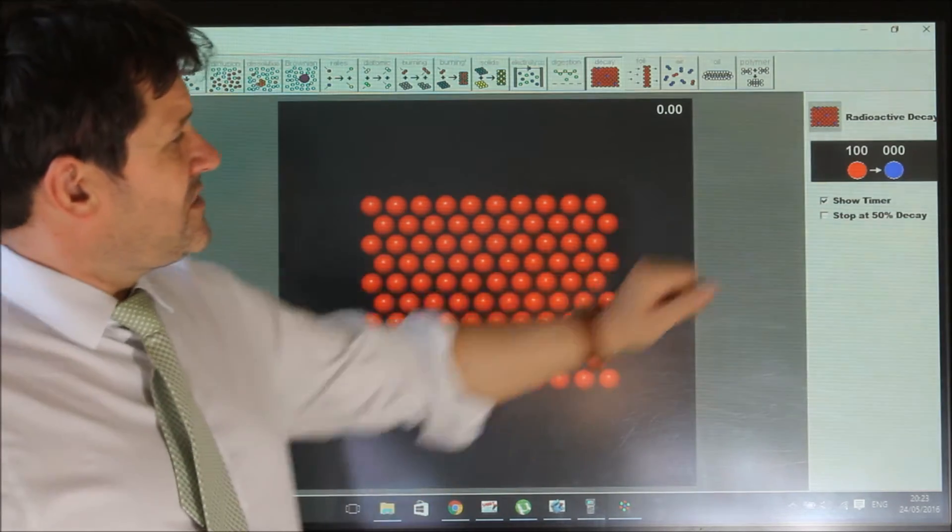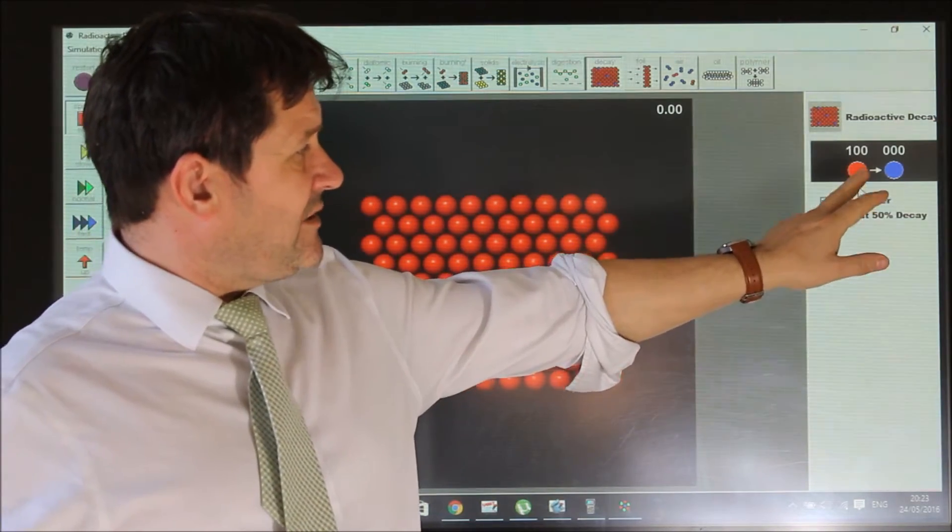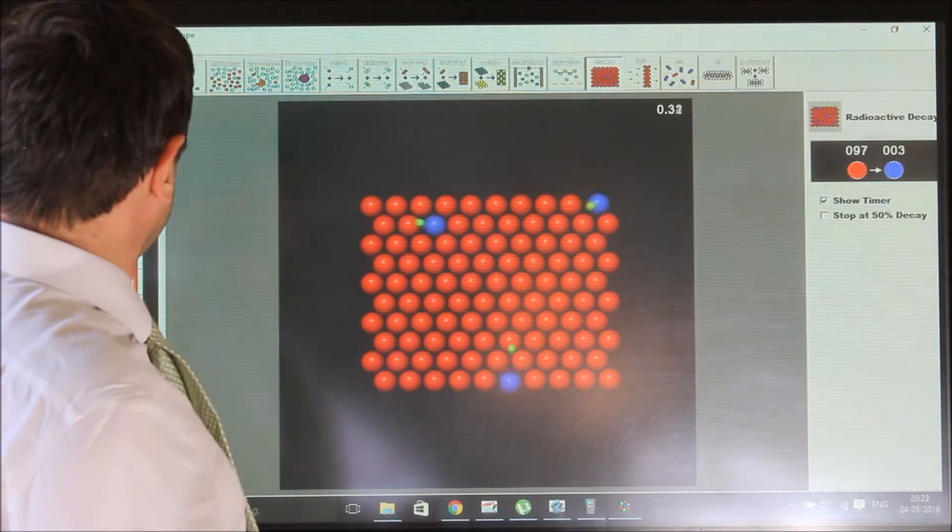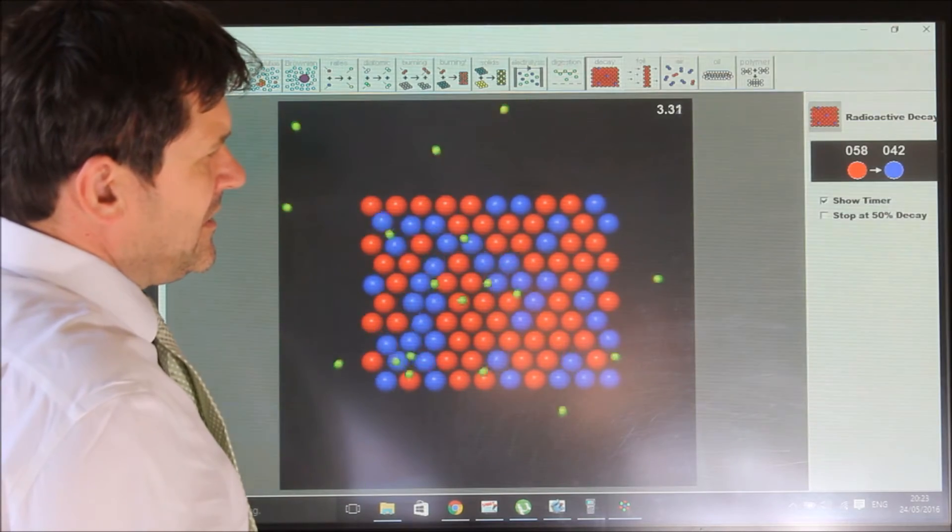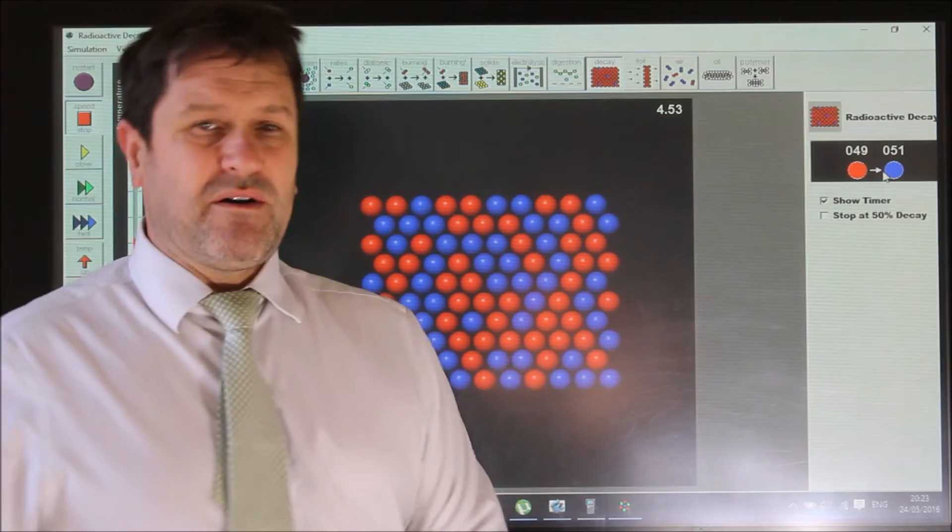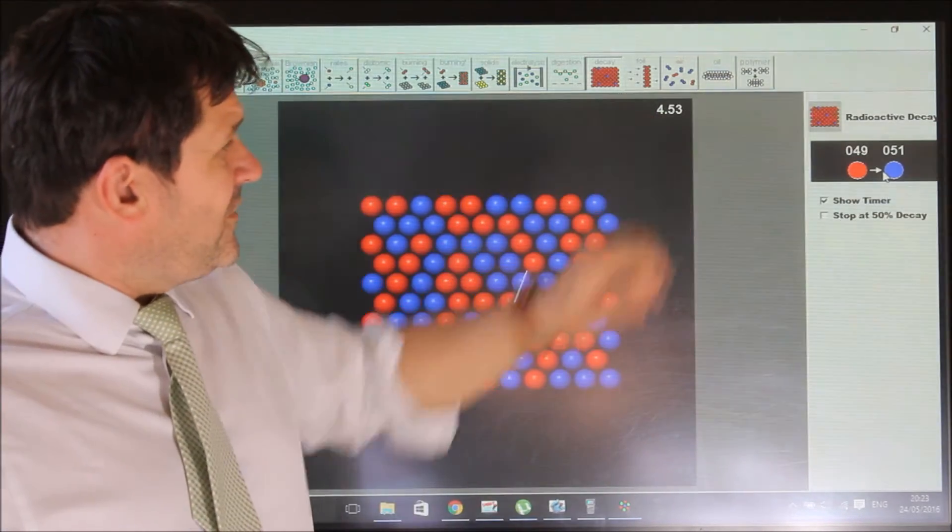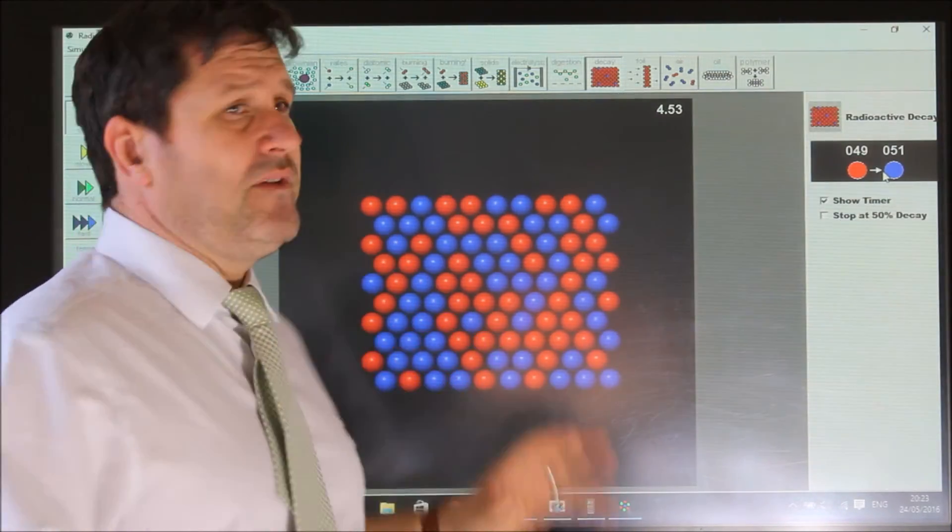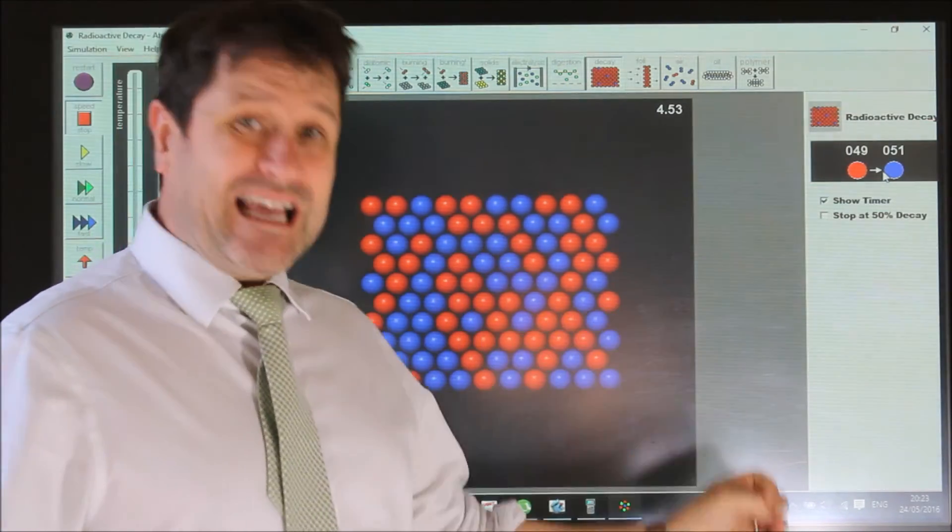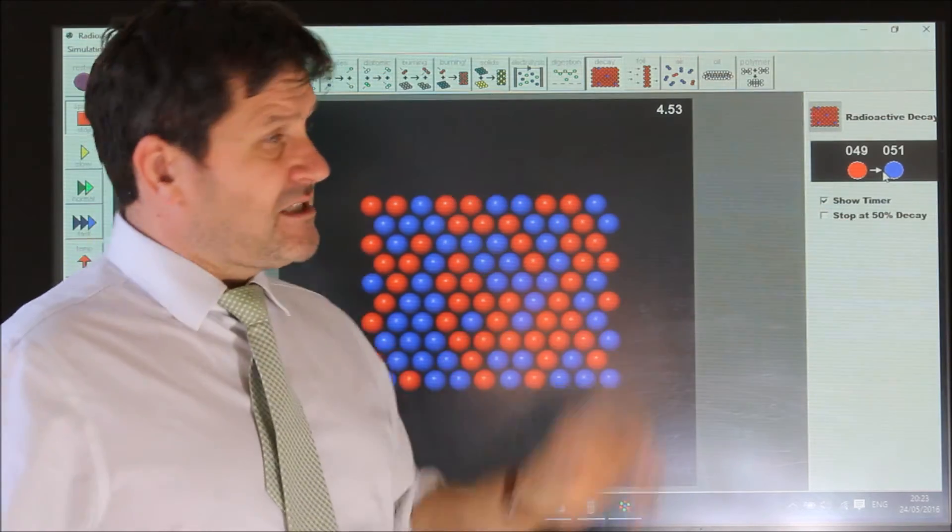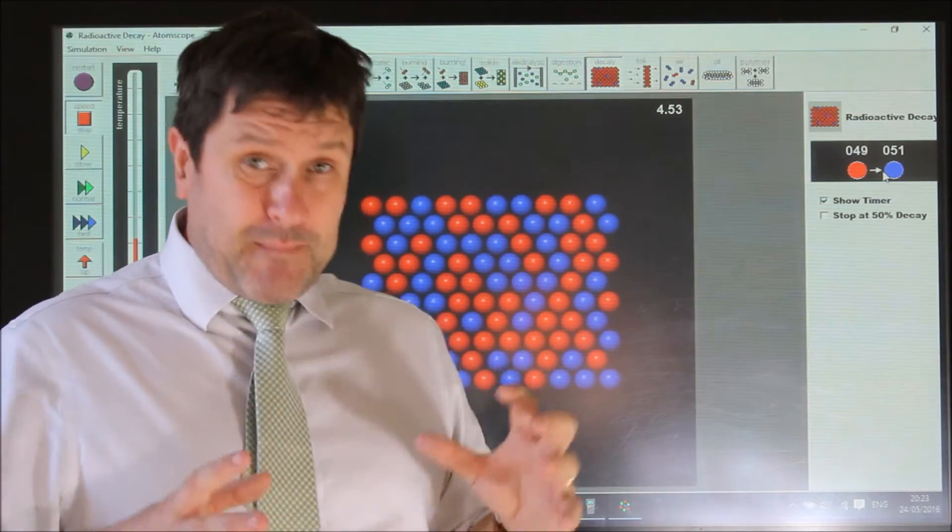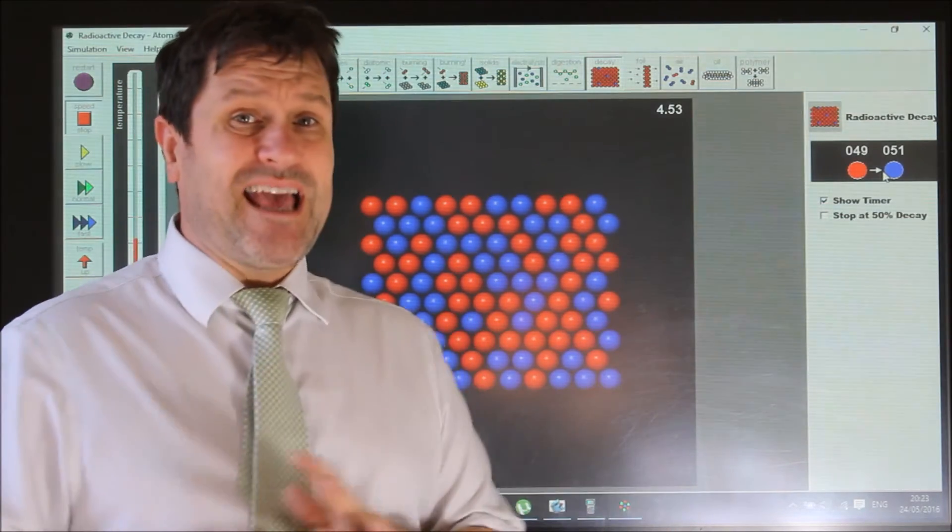We've got a hundred red nuclei and no blue ones. When I start this, I want to stop it so I've got half of them remaining. It took four and a half seconds for half of those nuclei to decay. That means the half-life of this sample is four and a half seconds. The half-life is the time taken for the amount of radioactive substance to decay to half its original value, for the mass of the radioactive elements to fall to half its original value.